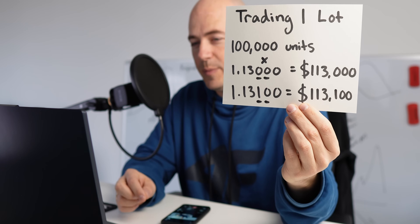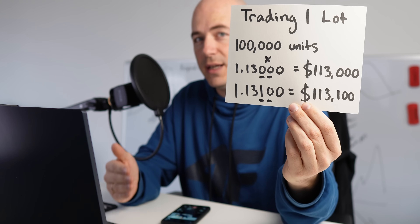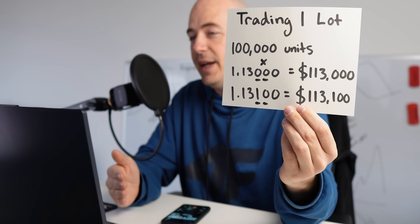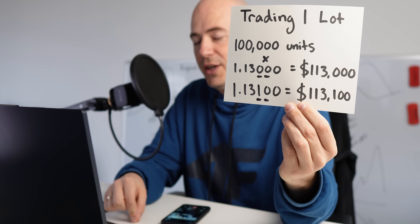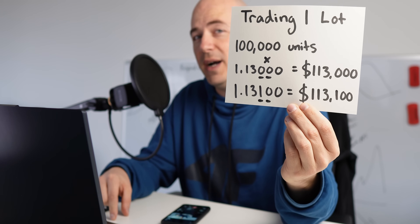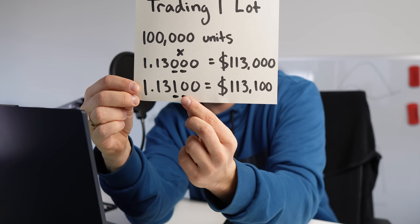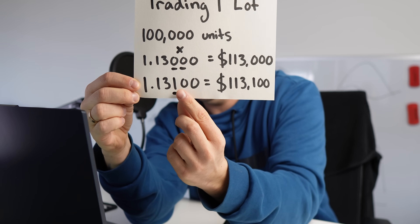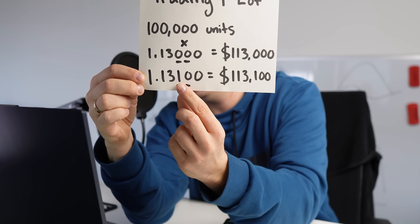When you are trading currency pairs, a standard lot is a unit of measure of the amount that you're purchasing. For example, if Euro/USD is 1.13 and you want to trade one standard lot — which is 100,000 units — in order to place that trade, you need $113,000. That's the current price multiplied by the number of units. You can see right here in the third and fourth decimal points of this price — if it were to go up from this price to this price, that would be a difference of 10 pips, which is basically a difference of 1/100th of the price.